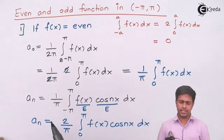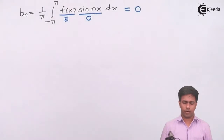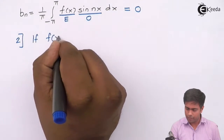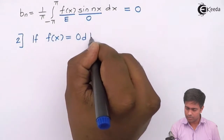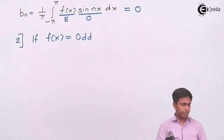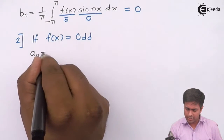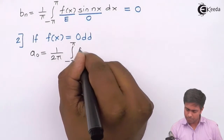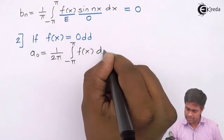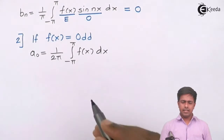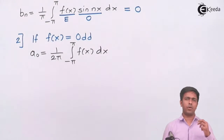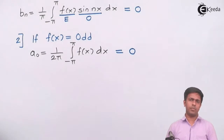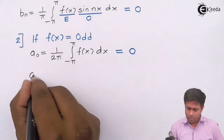Now Case 2: if f(x) is an odd function. For a₀, the general formula is (1/2π) times the integration from negative pi to pi of f(x) dx. Since f(x) is odd and the limit is from minus a to a, by the property of odd functions the integral equals 0, so a₀ = 0.